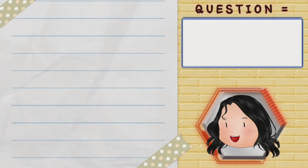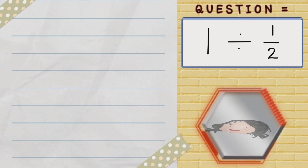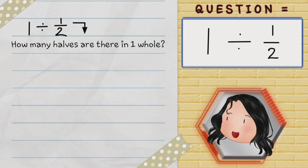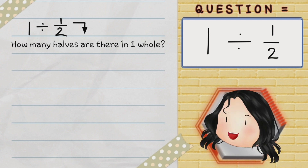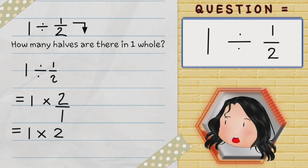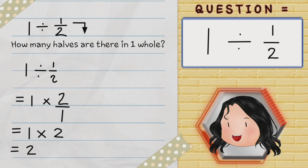Here's an example: 1 divided by a half. 1 divided by a half means how many halves are there in one whole. It's easy — just change it into multiplication. Don't forget to switch the top number with the bottom one of the second fraction. 2 over 1 is the same as 2, so 1 times 2 equals 2.